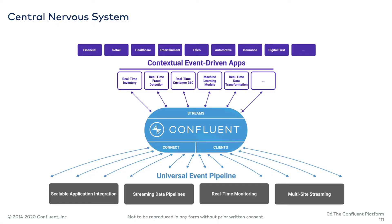As you're making Kafka into the central nervous system of your organization and adopting event streaming as a paradigm, building more and more event-driven applications, other needs arise. You're going to need replication between on-prem and cloud, or between regions in cloud. You're going to need automatic balancing of data within a Kafka cluster. You're going to need enterprise-grade security, management and monitoring. All these kinds of things are what Confluent Platform gives you.